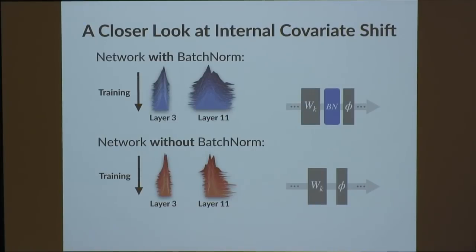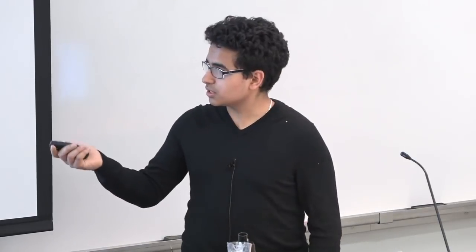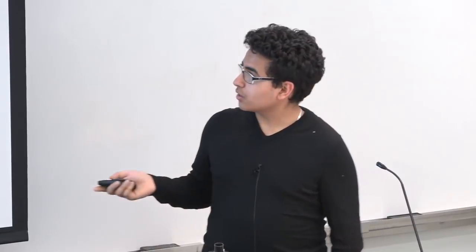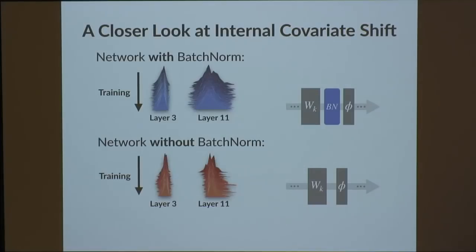The histograms for the non-batch-norm network look more stable than one would expect given the internal covariate shift hypothesis. This wasn't something super rigorous — this is what first caught our eye and led us to say, maybe it's worth looking into internal covariate shift a little bit more.